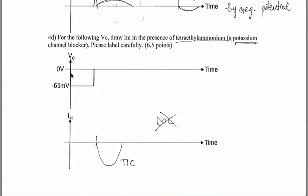Final question, 4D, is for the following membrane voltage. Draw the current, ionic current, in the presence of tetraethyl ammonium, which is a potassium channel blocker. Well, in this case, because we block potassium, we're going to have a sodium current, but no dock, basically no potassium current.